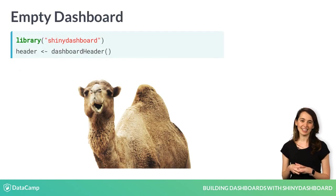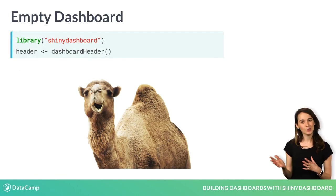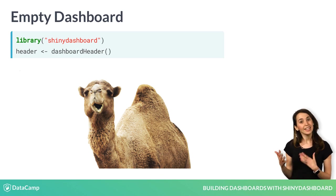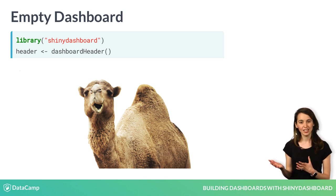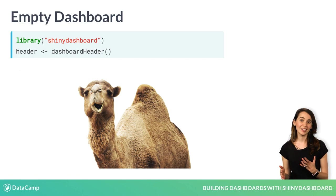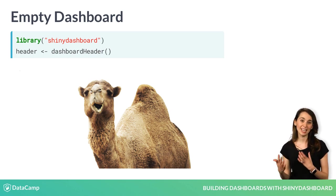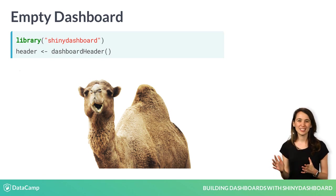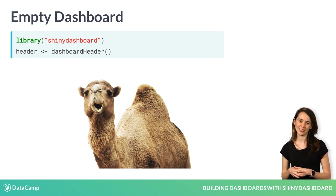The header is edited using the dashboard header function. Take a minute to notice here how the function is in camel case, by which I mean you can tell when there's a new word because it's capitalized — the H in header — and it looks like a hump on a camel. This is common syntax throughout the Shiny Dashboard ecosystem.